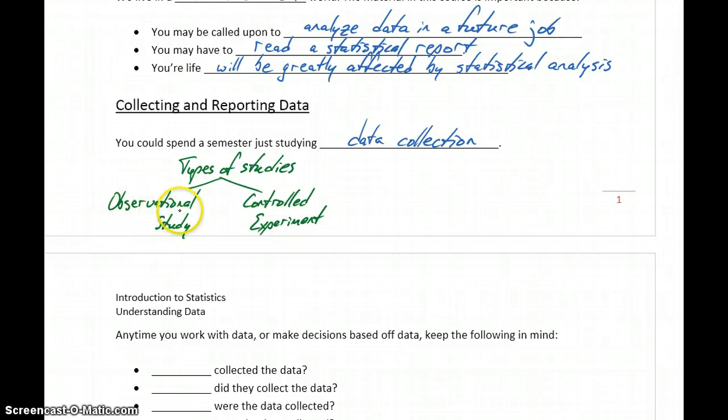So in an observational study, there's nothing we control. We're just observing people's behavior, seeing what we can notice. Controlled experiment, we're being more specific and precise with what's available to people, how we're treating them, what we're giving them, and then seeing those effects.